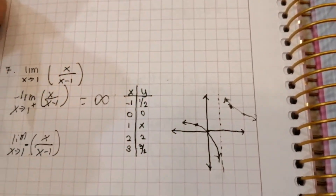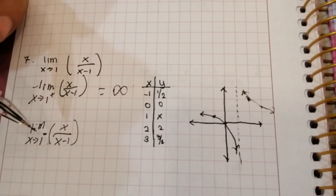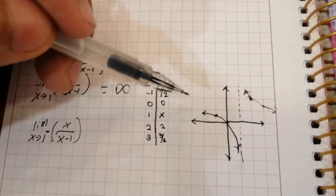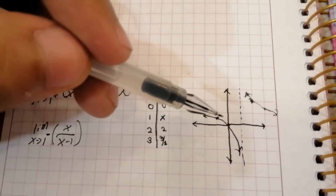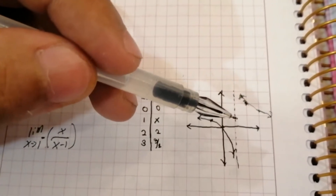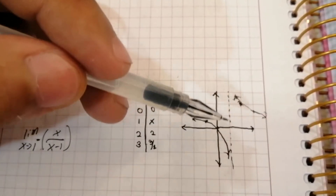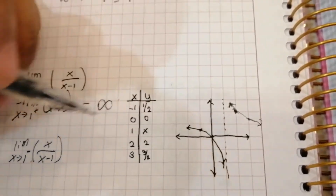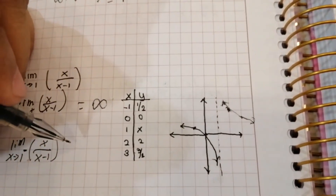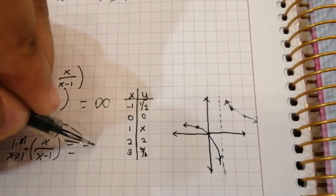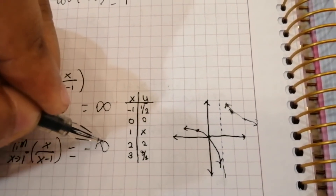Now, on the left side, which is the negative side, as it comes in going downward and gets closer to the asymptote, it goes down further until it reaches negative infinity.